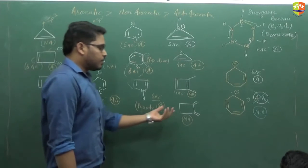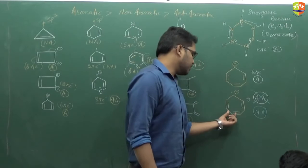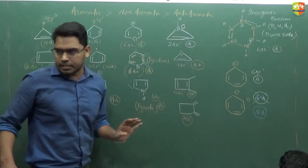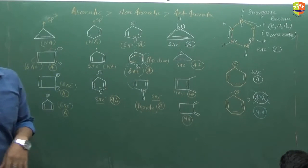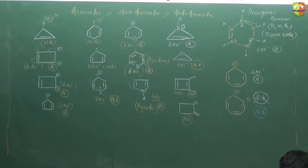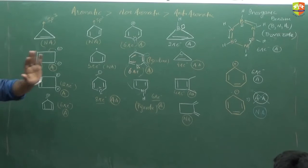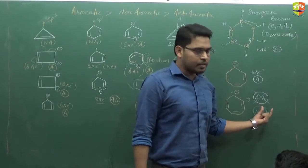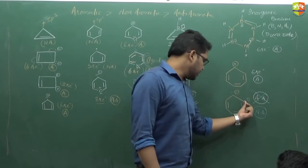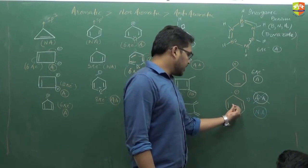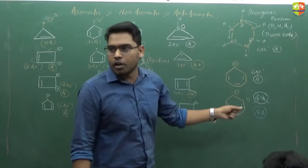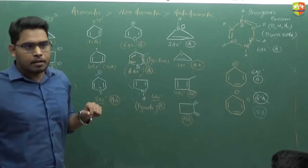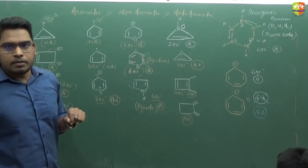Whenever the cyclic compound has 7 or more atoms present, it cannot be anti-aromatic. Aromatic is possible, but anti-aromatic is not possible, because anti-aromatic compounds are highly unstable. The molecule changes its plane and becomes non-aromatic. Anti-aromatic is only for 4-atom rings.